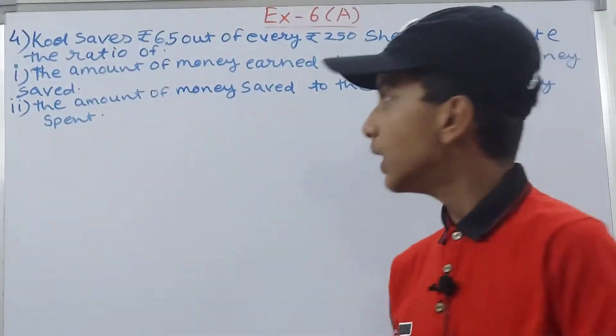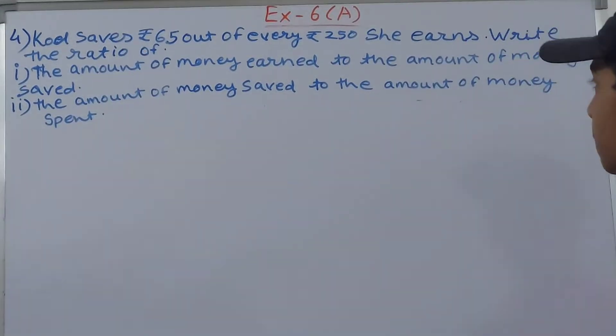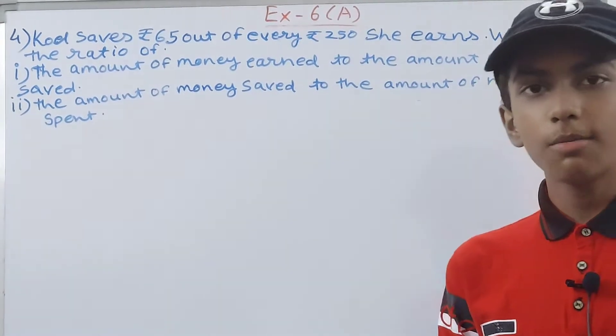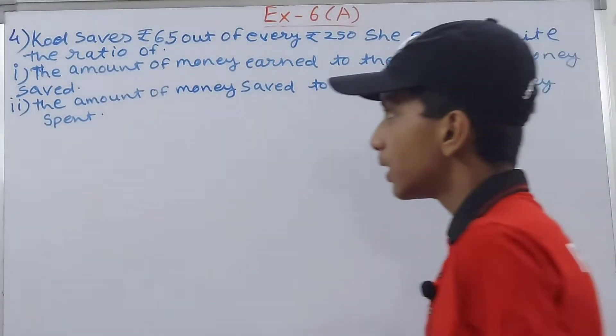Let's move on to the next part. The amount of money saved to the amount of money spent. Now we have to make the ratio between the amount of money saved to the amount of money spent.